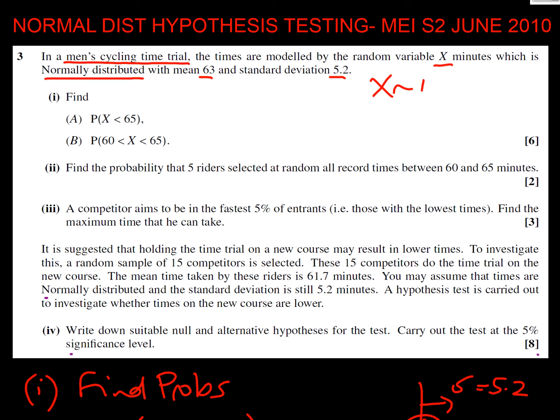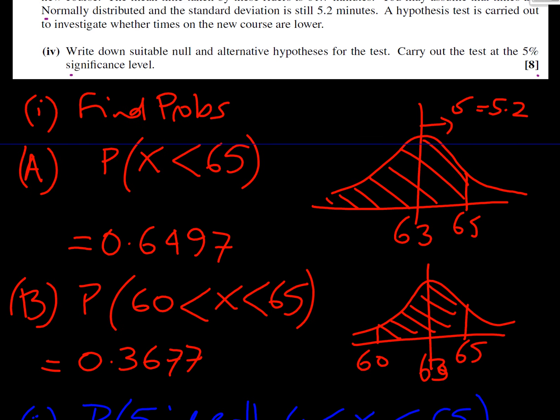So our X is normal, mean at 63, standard deviation is 5.2, so we put in the variance there, we put the square in. What's the first thing they're asking us to do? Find the probability that X is less than 65, and then find the probability that X is between 60 and 65. So let's move on quickly.